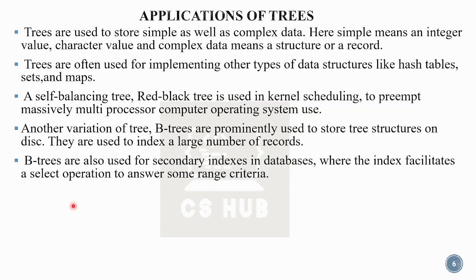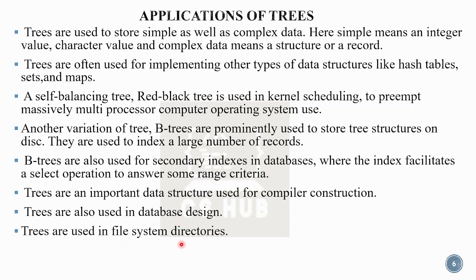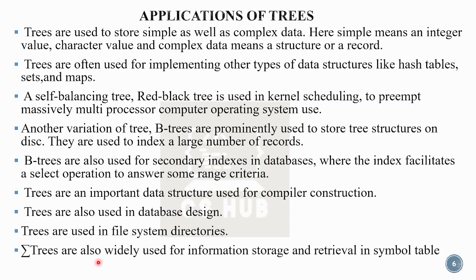B trees are prominently used to store tree structures on disk, to index a large number of records, and for secondary indexes in databases. Trees are an important data structure used in compiler construction. Trees are also used in database design, file system directories, and for information storage and retrieval. Symbol tables in operating systems use trees for linking and relocation.